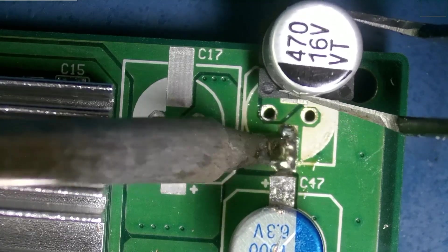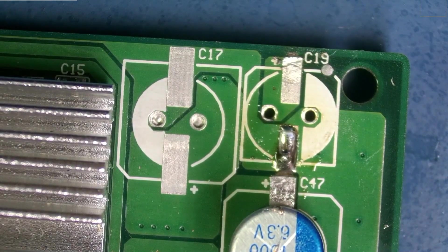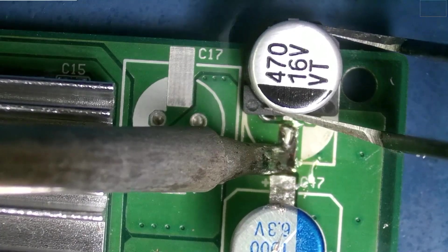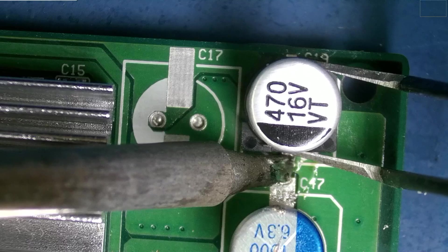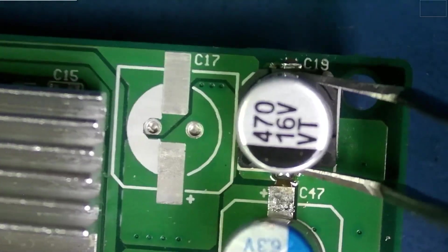And once we have the solder nice and molten—well, actually, you know what, before I do that I'm going to add a little bit of flux. This flux always helps. All right, now that the solder is nice and molten, we'll go ahead and slide the component onto the pad.